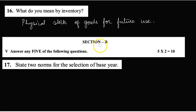Now moving on to Section B: answer any 5 of the following questions. There will be 8 questions. I need to answer 5 and each carries two marks, so 5 × 2 = 10. The 17th question: state two norms for selection of the base year. Firstly, it should be economically stable. Second, it should not be too distant from the current year.